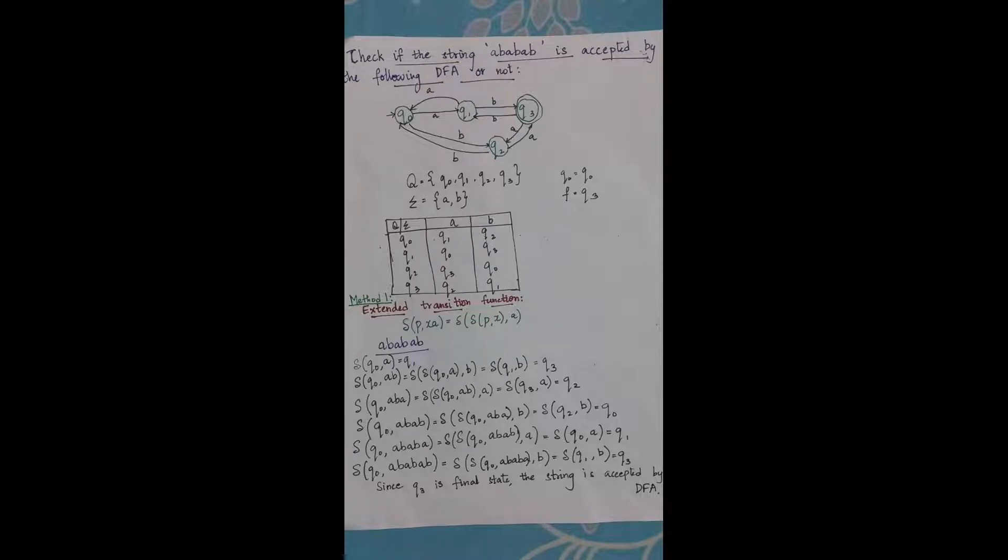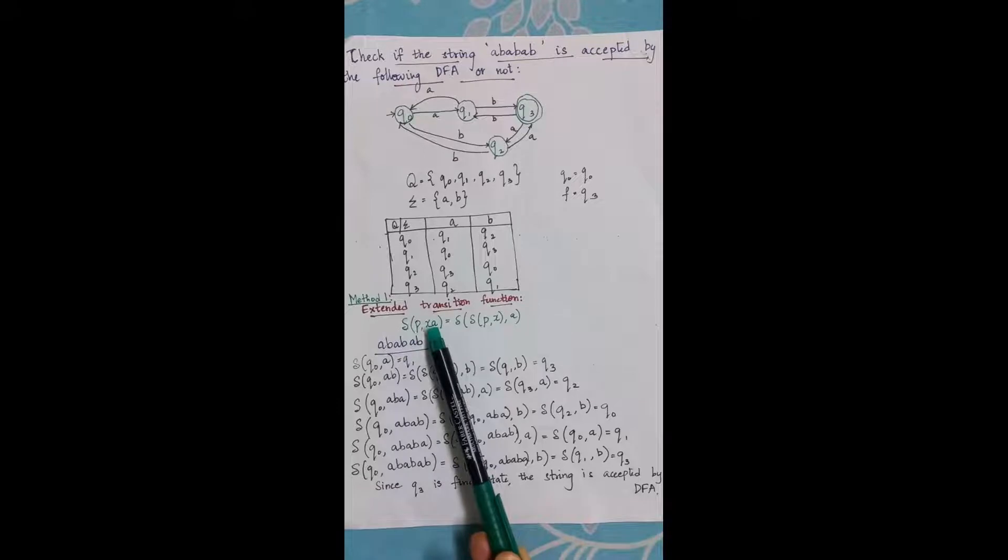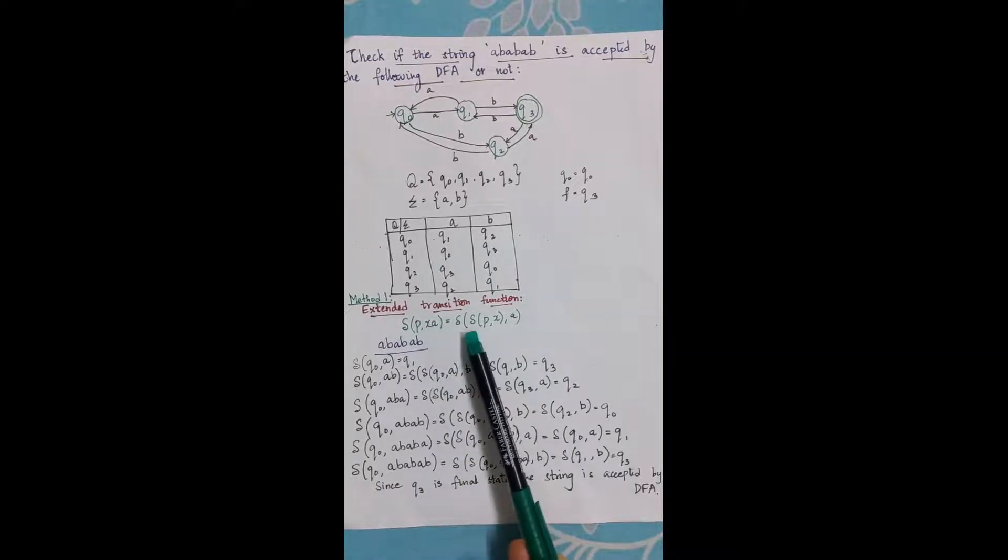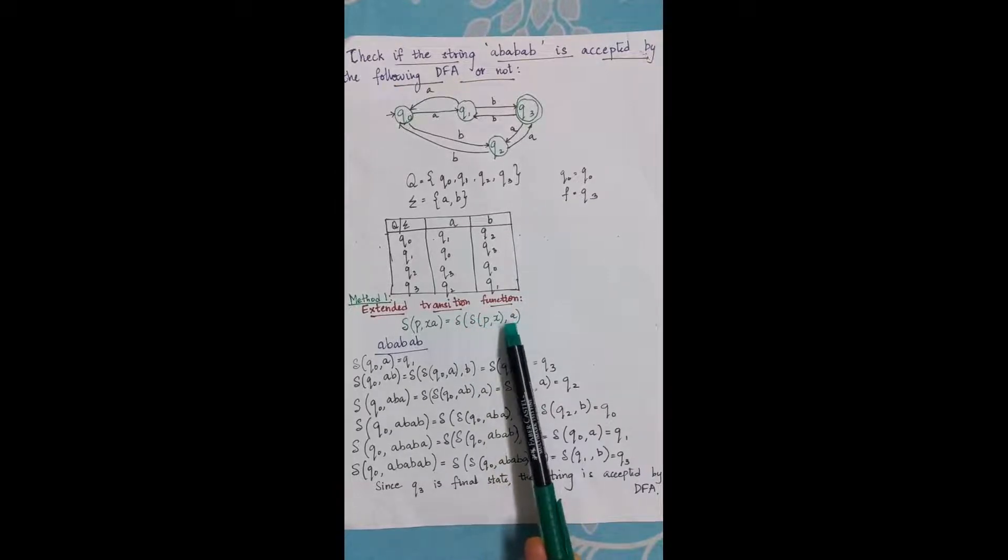The extended transition function tells that if we have more than one alphabet in the string, then delta of p comma xa should be considered as delta of delta of p comma x separately, and then comma a.